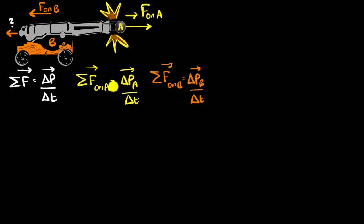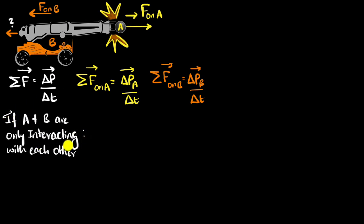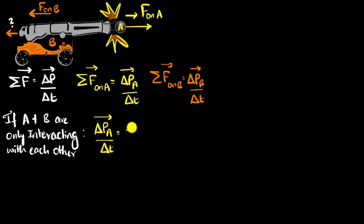But remember, from Newton's third law, these two forces are equal and opposite, because we're assuming that these are the only two forces acting. So these two must be equal and opposite. In other words, this must be equal and opposite to this. So let's write that condition: if A and B are only interacting with each other — and when I say interacting, I mean putting forces only on each other, no other forces — then these two forces must be equal and opposite. Therefore the rate of change of momentum of A must be equal and opposite, so negative sign, to the rate of change of momentum of B.